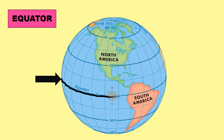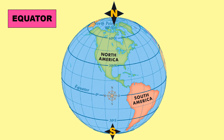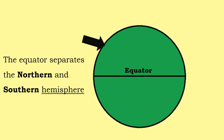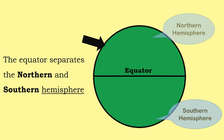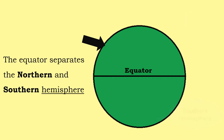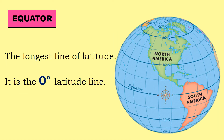Let's look at some important lines of latitude. The equator. The equator lies halfway between the North and South Poles. It divides the Earth into northern and southern hemispheres. This line is the longest line of latitude. It is also the zero-degree line of latitude.